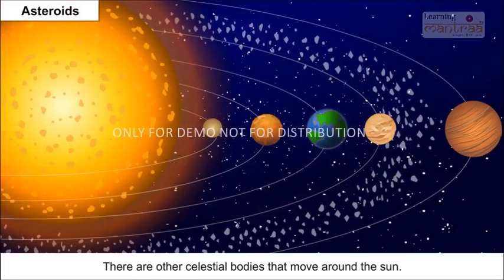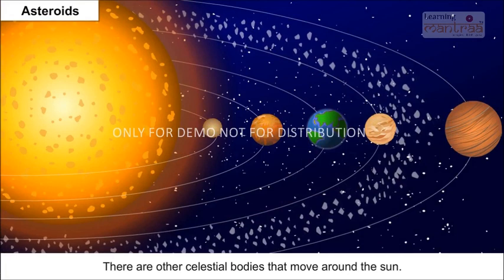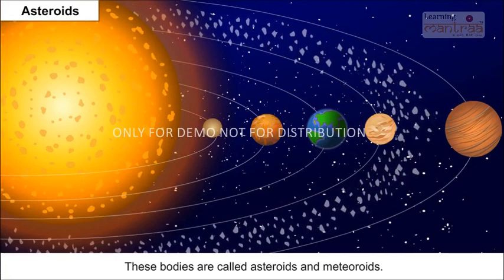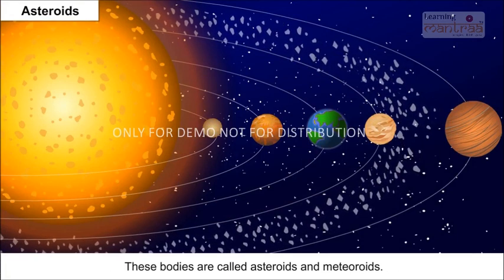There are other celestial bodies that move around the Sun. These bodies are called asteroids and meteoroids.